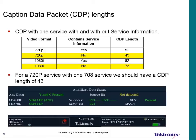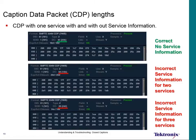Looking at the auxiliary data status, it states one 608 service (CC1) and one 708 service (Service 1). We would expect the data packet CDP length to be 43 bytes for a 720 stream. In the top presentation the CDP data count is 43 — that's hex 0x22. Below that is the same service but with service information turned on, incorrectly indicating two services when there was only one. We've also seen cases of three services being indicated for a stream that only has one caption service.